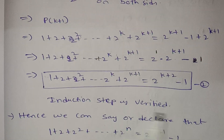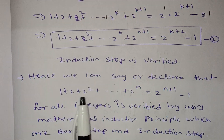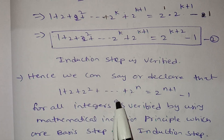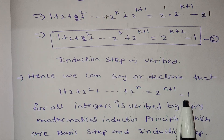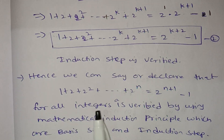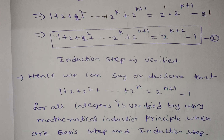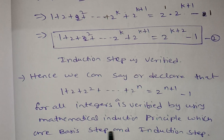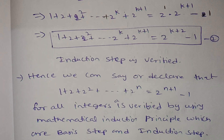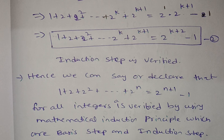The induction step is verified. Hence we can declare that 1 + 2 + 2² + ... + 2ⁿ = 2^(n+1) − 1 for all non-negative integers n, verified by using the mathematical induction principle — both the basis step and induction step are complete.